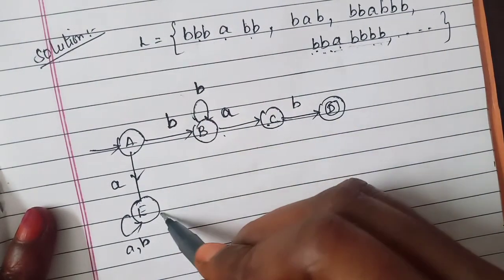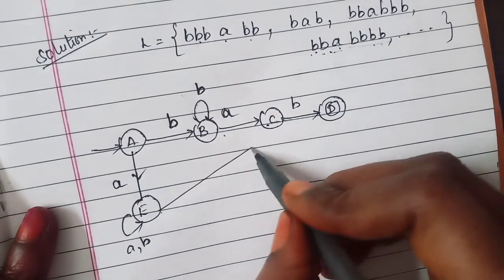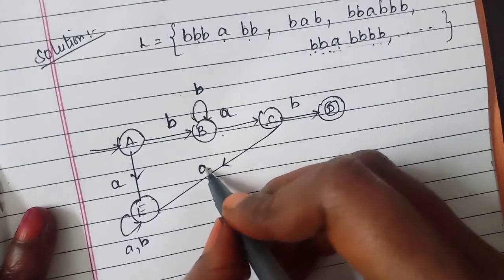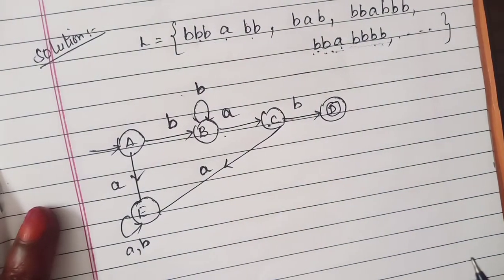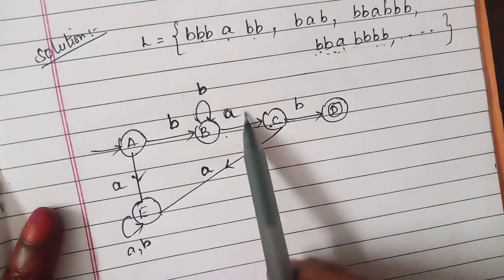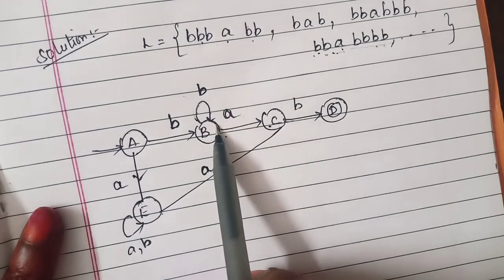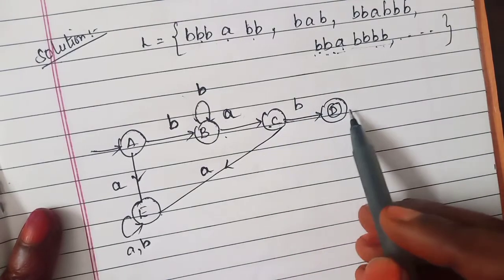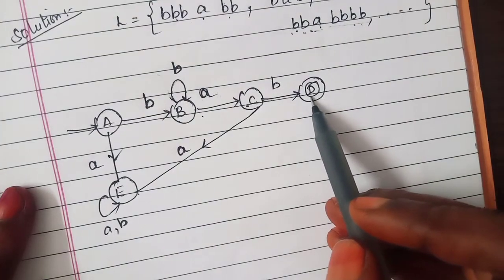You need to draw a, but here there should be only one a which is followed by any number of b's. That's why from C only the a will be connected to this trapped state. Why? Because there should be only one a followed by any number of b's and after that you will have this state D.